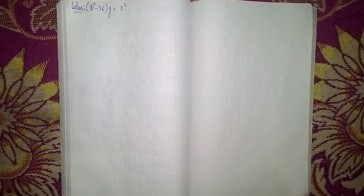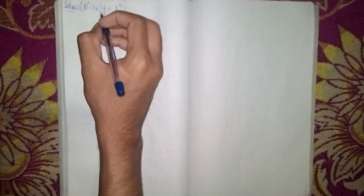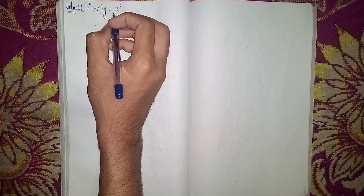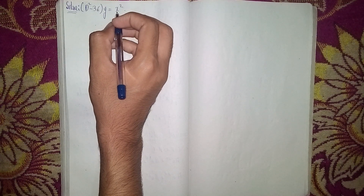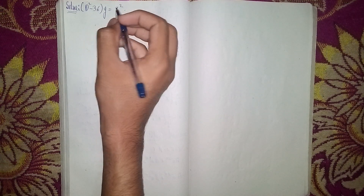Hello everyone, welcome back to my channel. Today's question is: solve (D² - 36)y = x². This is a non-homogeneous linear differential equation.